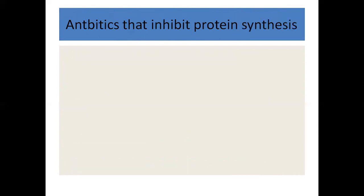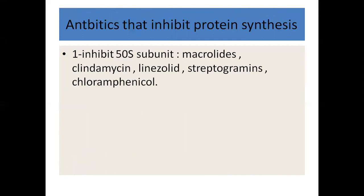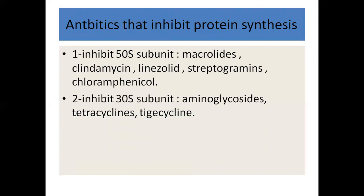Antibiotics that inhibit protein synthesis are the last group. Number one, those that inhibit the 50S ribosomal subunit are the macrolides, clindamycin, linezolid, streptogramins, and chloramphenicol — most importantly the macrolides. Number two, those that inhibit the 30S ribosomal subunit are the aminoglycosides, tetracycline, and tigecycline.